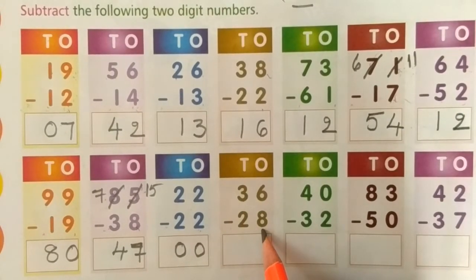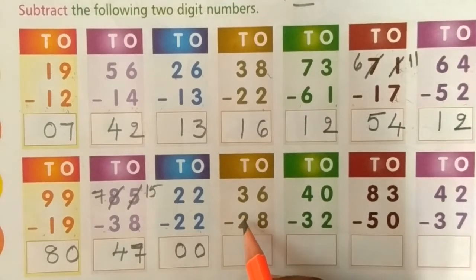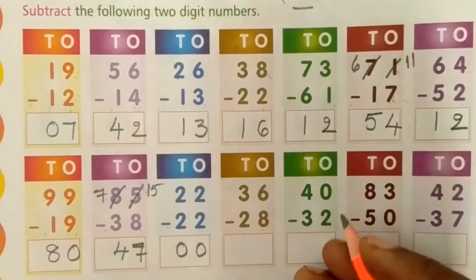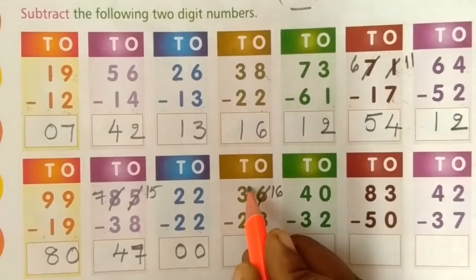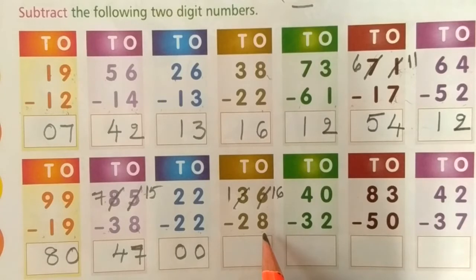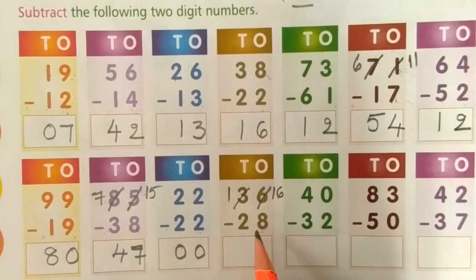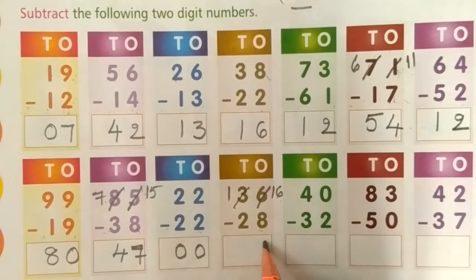Next: 36 minus 28. Is it possible? No. What do you have to do? Borrow from the 10's place to the 1's place. Cut off 6, write 10 plus 6 equals 16. Then 3 minus 2 equals 1. Now backward counting: close all fingers. After 8, count to 16 — 9, 10, 11, 12, 13, 14, 15, 16. So 8 is the answer.